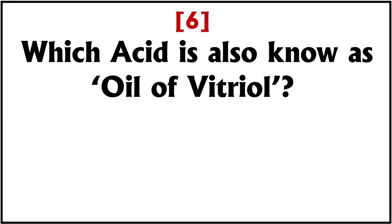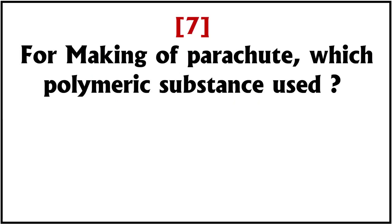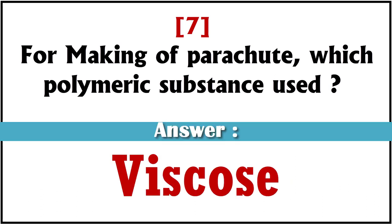Which acid is also known as oil of vitriol? Answer: sulfuric acid. For making of parachute, which polymeric substance is used? Answer: viscose.